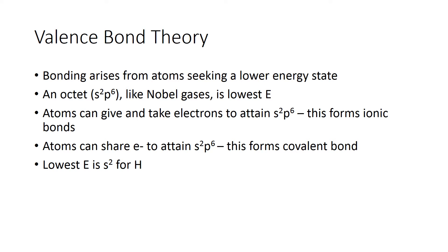We're going to look at valence bond theory in this lecture. It's the simplest idea of how bonds occur in molecules — not the best theory and it doesn't explain a lot of things, but it's the simplest one we find useful. In valence bond theory, bonding comes from atoms overlapping their orbitals, which allows them to find a lower energy state, so they stay overlapped and form a bond.